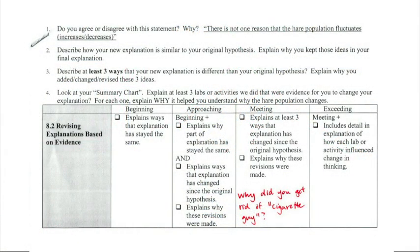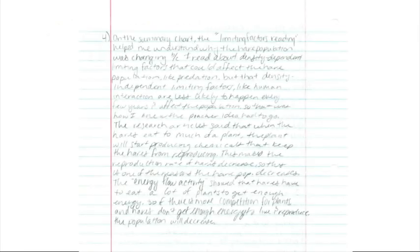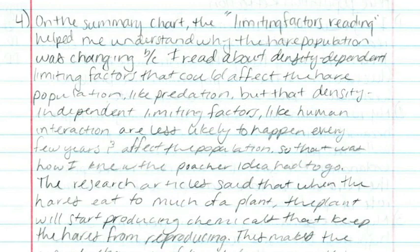But Bethany also asked her students to do two things as individuals that she would evaluate and grade. The first was an analysis of how their initial explanation had changed and what ideas or evidence had caused them to revise their thinking. This student's response states why the original explanation was changed. It links together the ideas of density-dependent limiting factors, predation, plants directly influencing the reproduction rate of hairs, competition, and the transfer of energy in ecosystems.